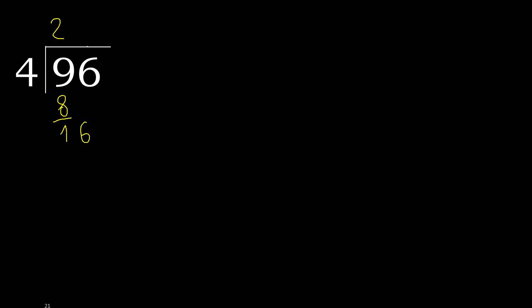Next: 16. 4 multiplied by 4 is 16. 16 is not greater — 16 minus 16 is 0. There is no next number, therefore finish it.